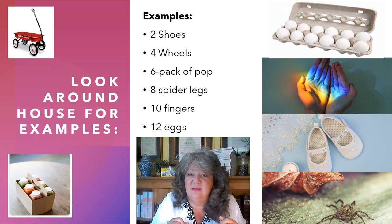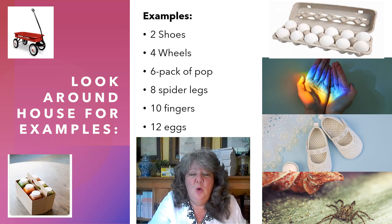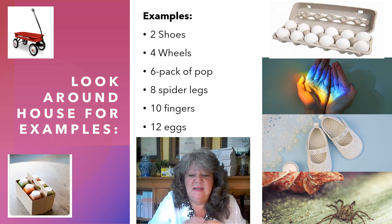Or count the eggs: one, two, three, four, five, six, seven, eight, nine, ten, eleven, twelve — there are twelve eggs. Go through each of the examples. Once you've counted all of them, lay them in order from two all the way up to twelve, counting by twos.